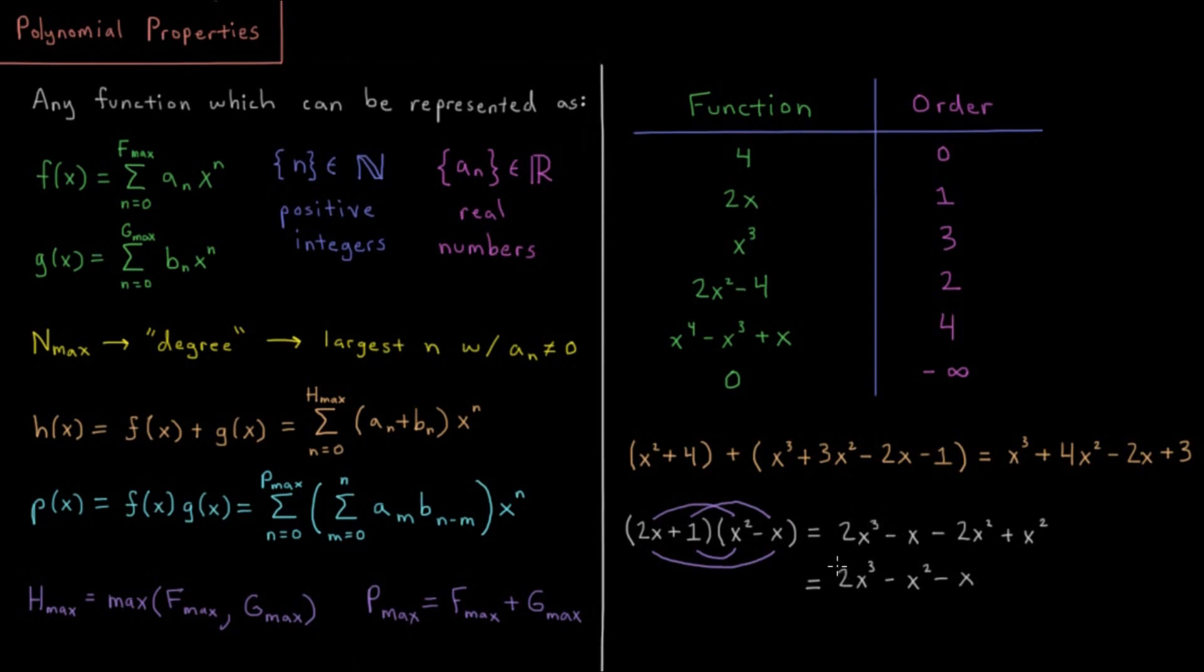And then those all work together, so these two terms are both quadratic, so we can add those together, they end up giving us a coefficient of negative 1 for n equals 2. And all the other ones are the only term that they have at that order.